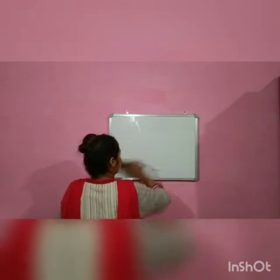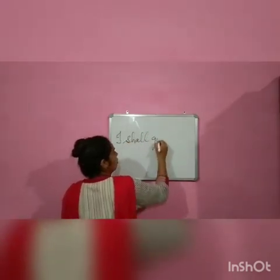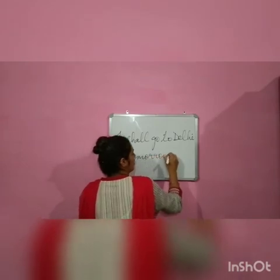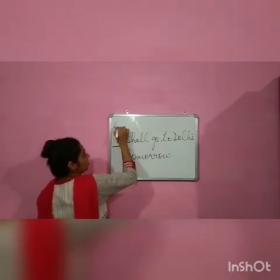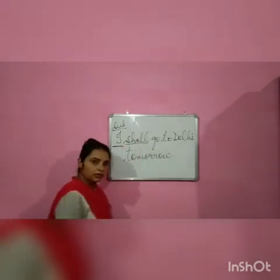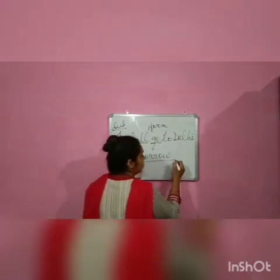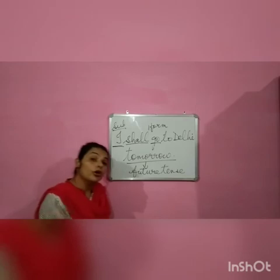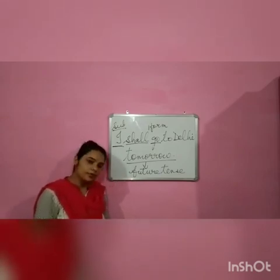Now, with the help of an example it will be more clear to you. For example: I shall go to Delhi tomorrow. Now, 'I' is the subject. According to the rule, with 'I' we use shall. 'Shall go' — and 'go' is the main verb, first form. 'To Delhi tomorrow' — this 'tomorrow' is showing the future. So this is the process, this is the method we use in simple future tense.